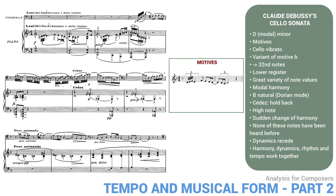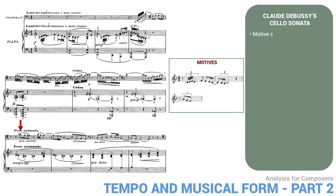Two bars after the CEDE, the music is marked POCO ANIMANDO. Now the cello lands on the high A, presenting a new motive — motive C — an upbeat followed by an appoggiatura. This motive, along with a variant of motive B, will dominate the cello line until the next tempo change, the CEDE, right before rehearsal 1. The piano texture here is much thinner and slower, just quarter note chords. The music seems to have settled down a bit, after the wide range of rhythm and mood in the opening bars.